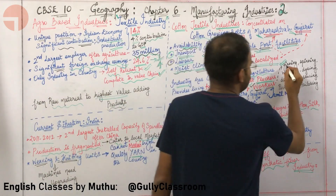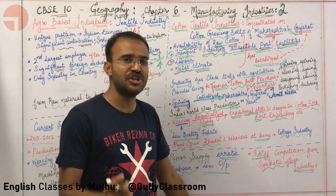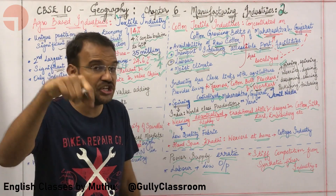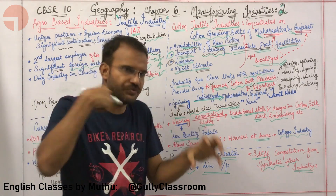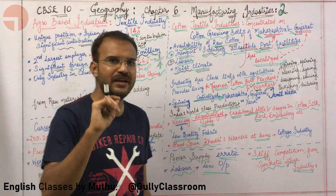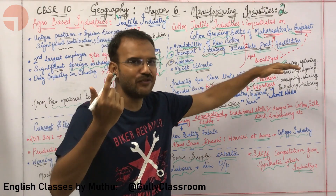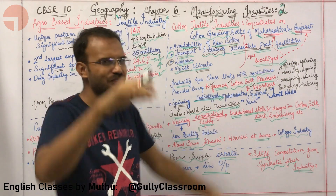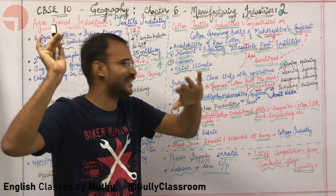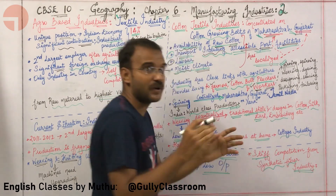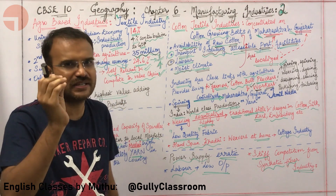What is ginning? Ginning is the process by which seeds and other debris are removed from the cotton. It is derived from the noun 'cotton gin.' So ginning is the process of removing seeds and other debris from the actual cotton.